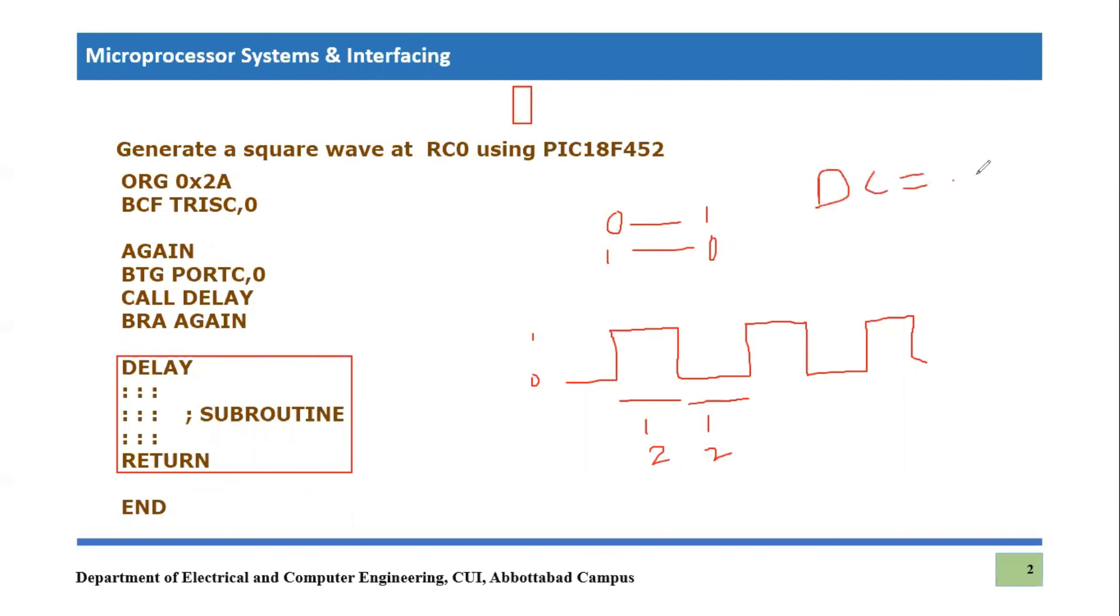If it is one second, it would also be one second. If it is two seconds, it would also be two seconds. This is called 50% duty, 50% duty cycle. What is a duty cycle? Duty cycle refers to the ratio of time on time. What is the on time and the total time? Total time would be equal to on time plus off time. So this is called duty cycle. I hope you understand what is duty cycle. Duty cycle is a ratio of time duration for which it is on and the total cycle duration.